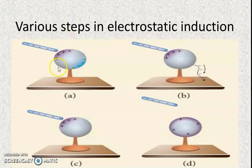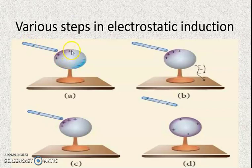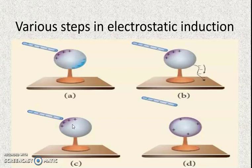To repeat the whole process: first, we have a neutral body. We bring a negatively charged rod near it — positive charges are attracted toward the rod, negative charges go to the far side. Then we ground the body — the negative charges flow to the ground. We remove the grounding wire, and the body retains the positive charge. Finally, the sphere is positively charged.